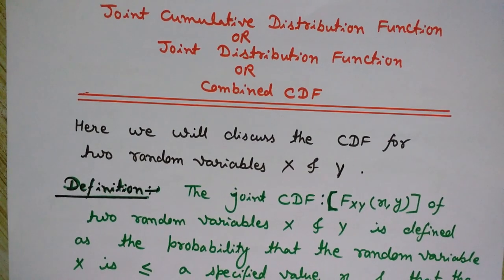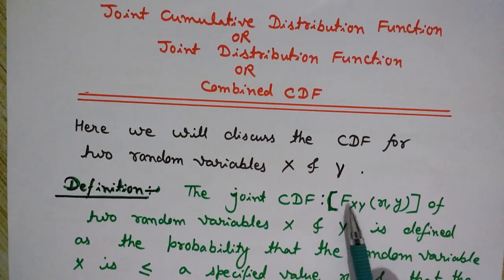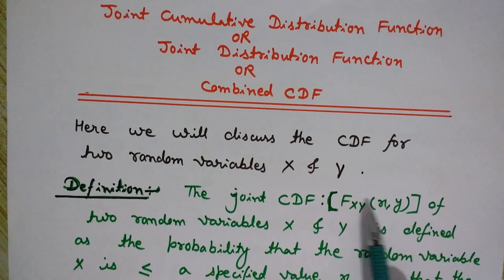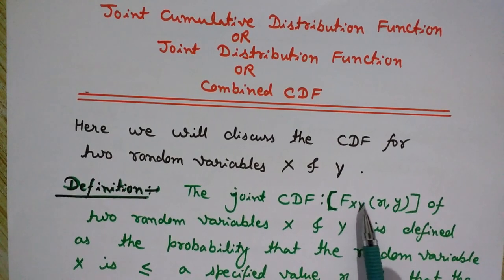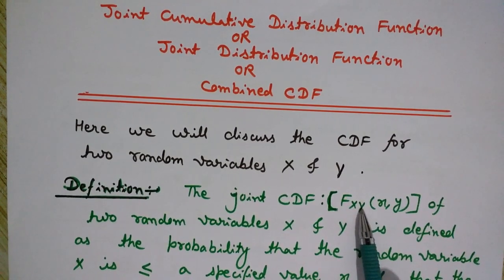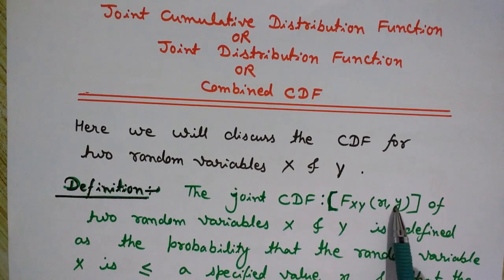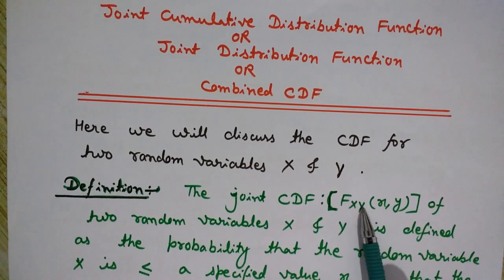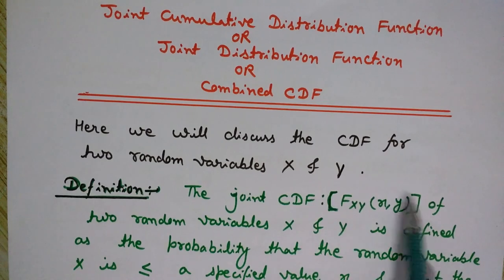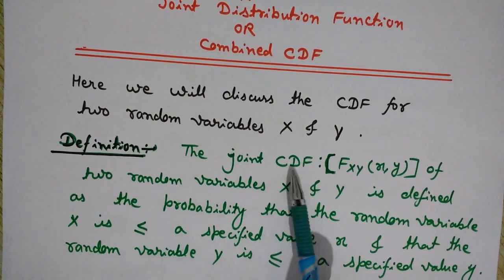If you understand the concept of the cumulative distribution function, then this lecture is going to be very easy. For the joint CDF, we denote it as F subscript XY of (x, y), because here we are taking two random variables: capital X is the first random variable and capital Y is the second. The small x represents values from random variable X, and small y represents values from random variable Y.